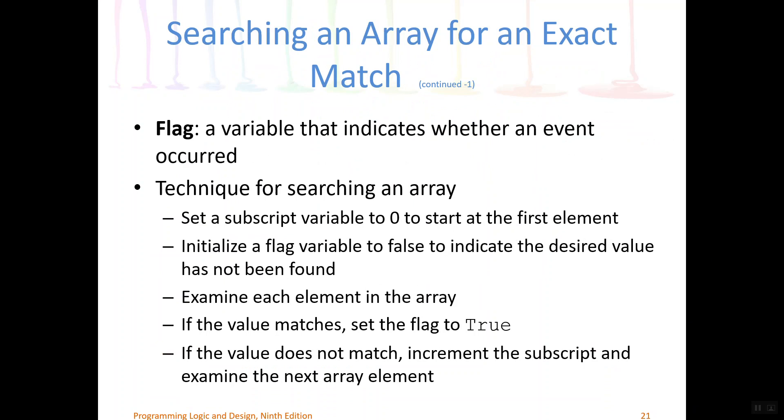We're going to utilize a flag in our next example. Before we look at that, let's look at the general technique for searching an array. We want to start out by setting a subscript variable, remember that's also called an index variable, to zero to start at the first element before we begin. We also want to initialize our flag variable to false, or N for no, to indicate that we haven't found the desired value yet. Then we'll use a loop to examine each element in the array, and if we get a match, we'll update that flag value.